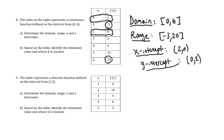Based on the table, we identify the minimum value. The minimum value is negative 3, which occurs when X equals 1.